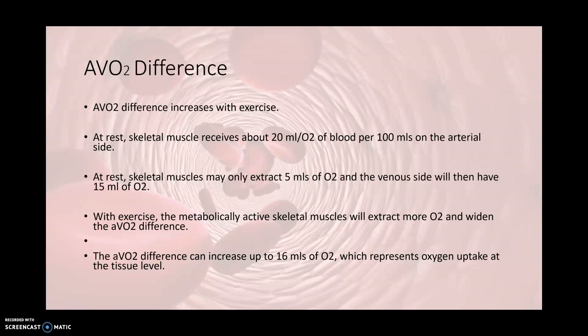What is AVO2 difference? AVO2 difference increases with exercise. At rest, skeletal muscle receives about 20 mLs of O2 per 100 mLs on the arterial side. At rest, skeletal muscles may only extract about 5 mLs of O2, and the venous side will then have about 15 mLs of O2. With exercise, the metabolically active skeletal muscles will extract more O2 and widen their AVO2 difference, which can increase up to 16 mLs of oxygen, representing oxygen uptake at the tissue level.